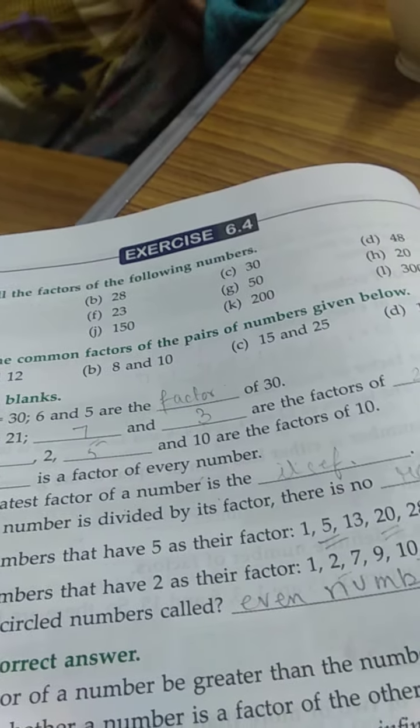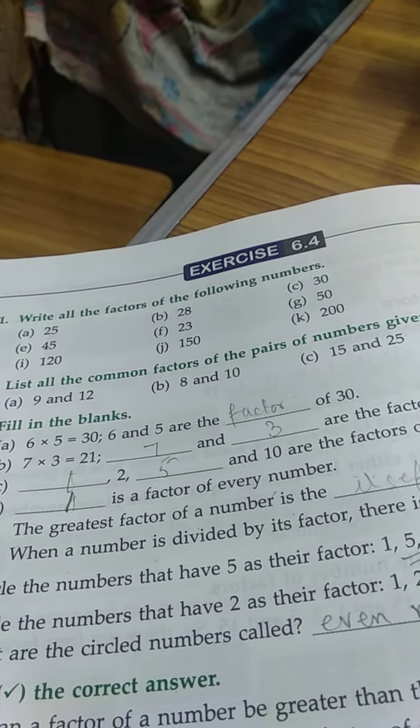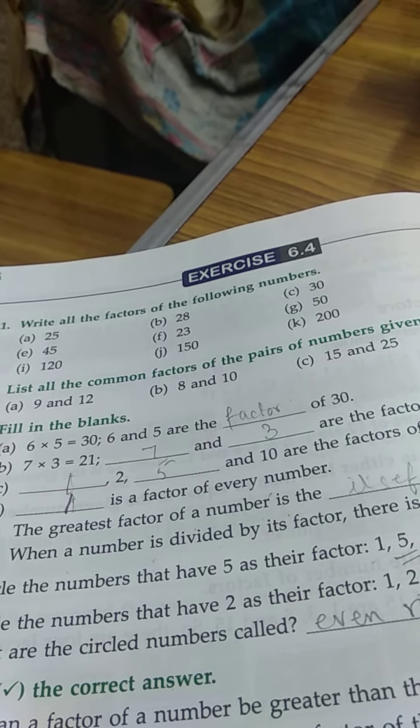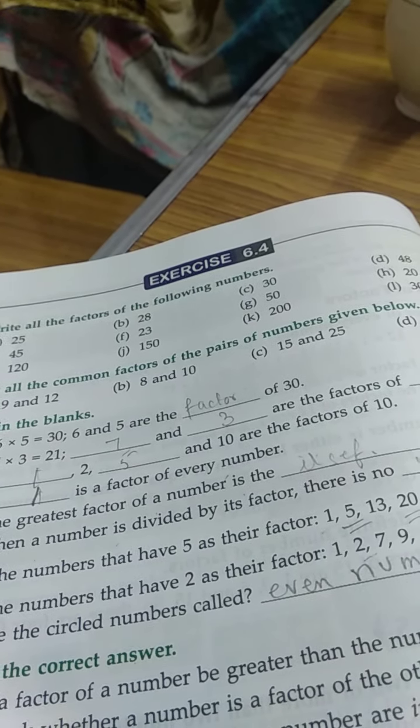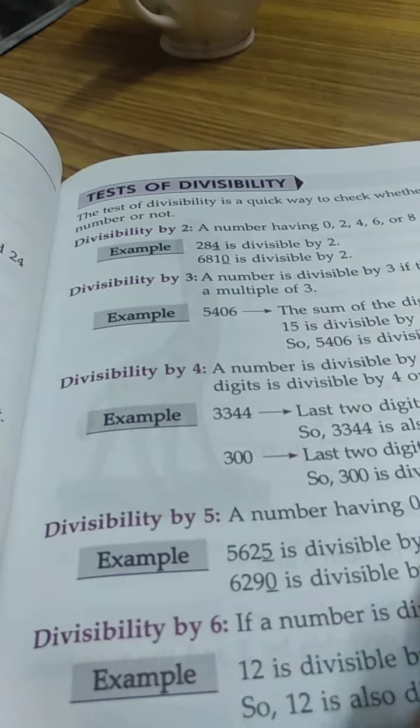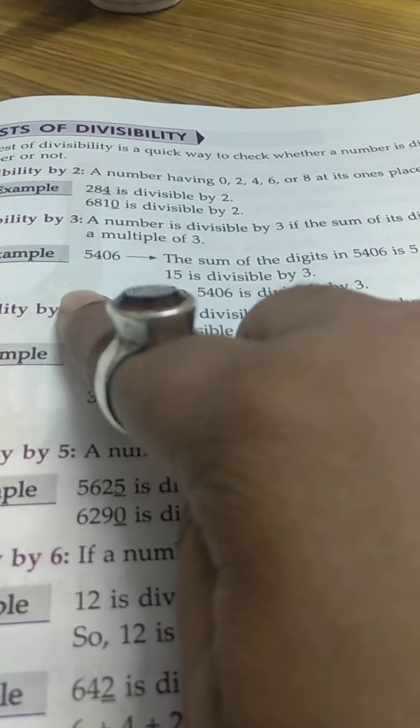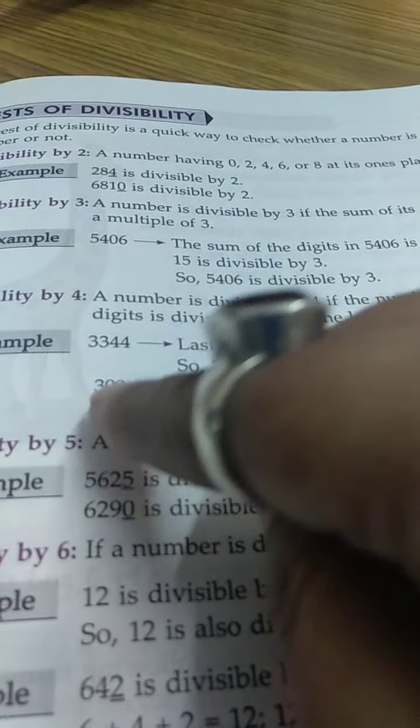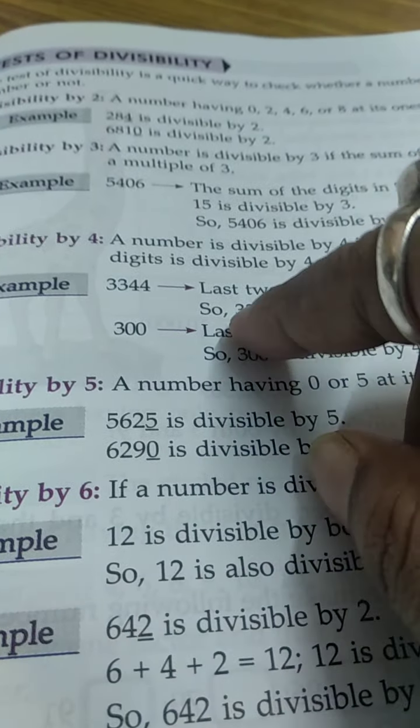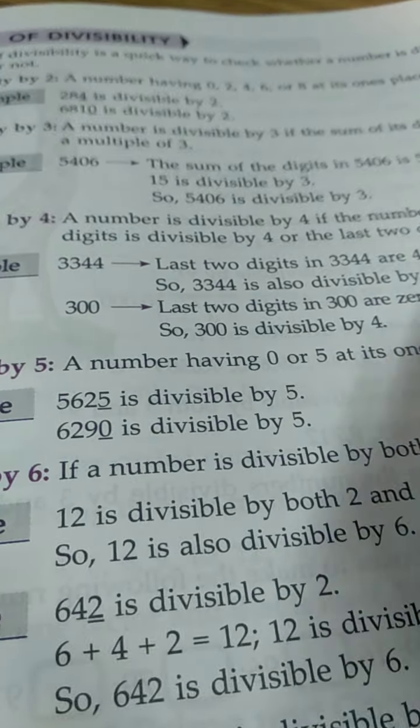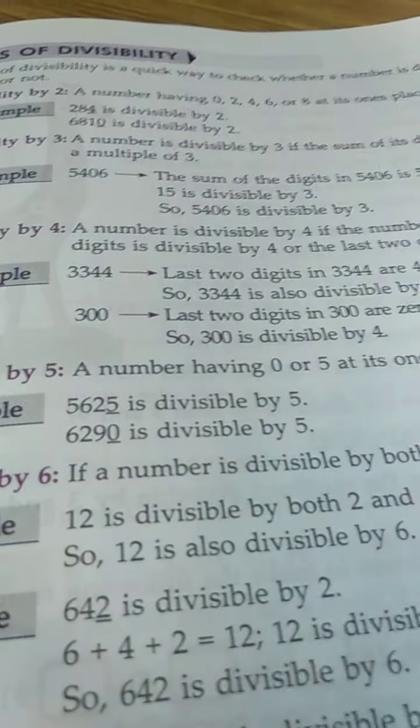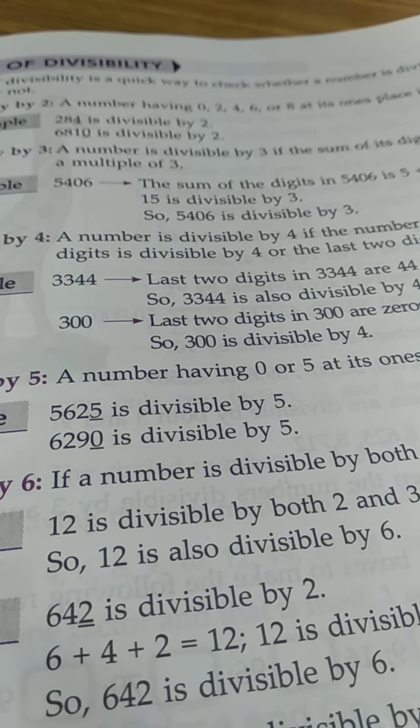Do it in your copy. There is all this in the book and the rest in your copy. For the next class, we have to learn about tests of divisibility. Better you read this chapter on why a number is divisible by 2, 3, 4, 5, 6, so that when I explain, you can understand. Better you read it and I will explain how and why it is done. Alright.